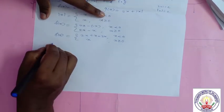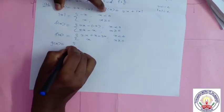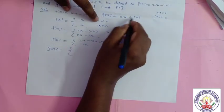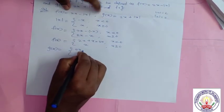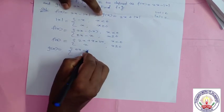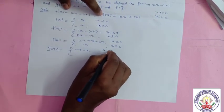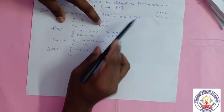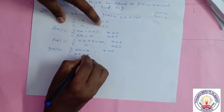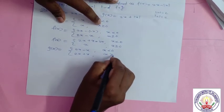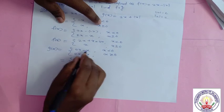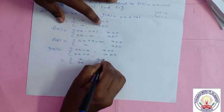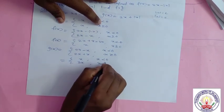Similarly we rearrange g(x). When x < 0, modulus of x = -x, so g(x) = 2x + (-x) = 2x - x = x. When x ≥ 0, modulus of x = x, so g(x) = 2x + x = 3x. So g(x) = x when x < 0, and 3x when x ≥ 0.